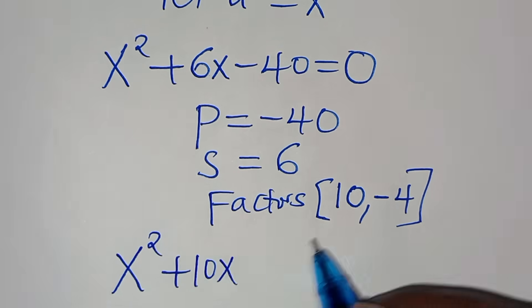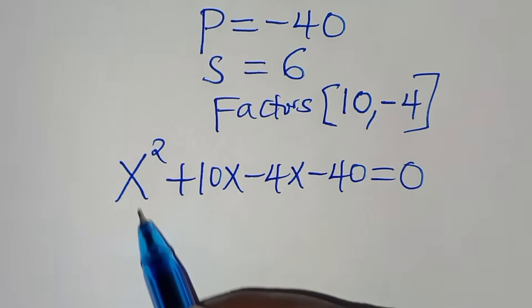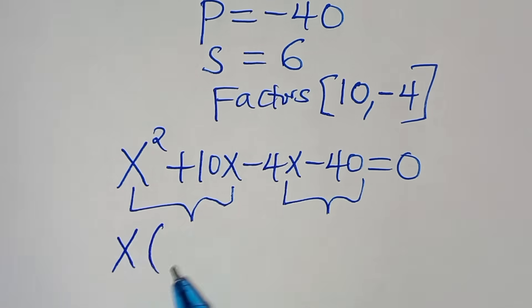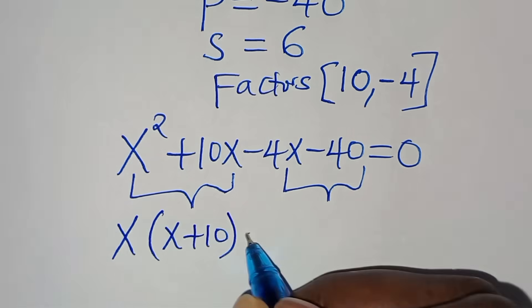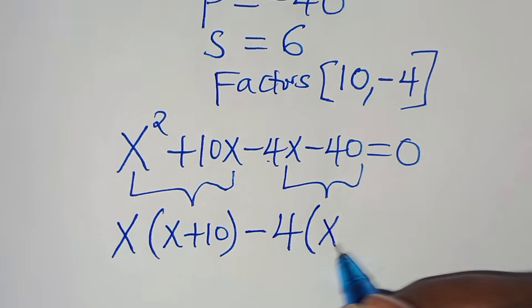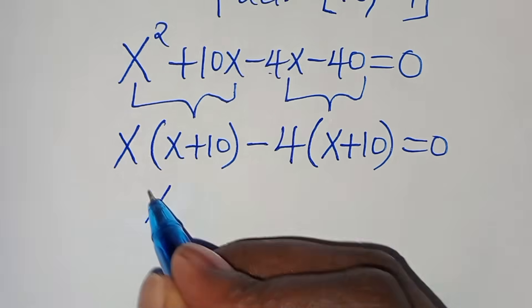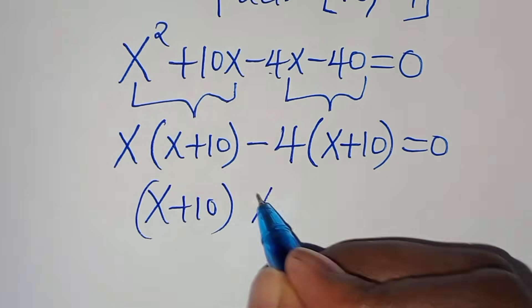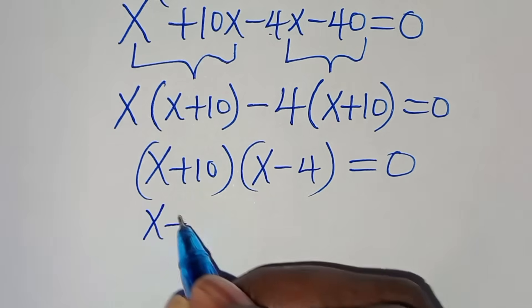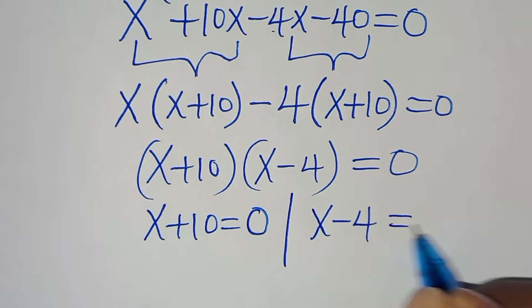So we write x² + 10x − 4x − 40 = 0. Factoring: x(x + 10) − 4(x + 10) = 0, giving (x + 10)(x − 4) = 0. Therefore x = −10 or x = 4.